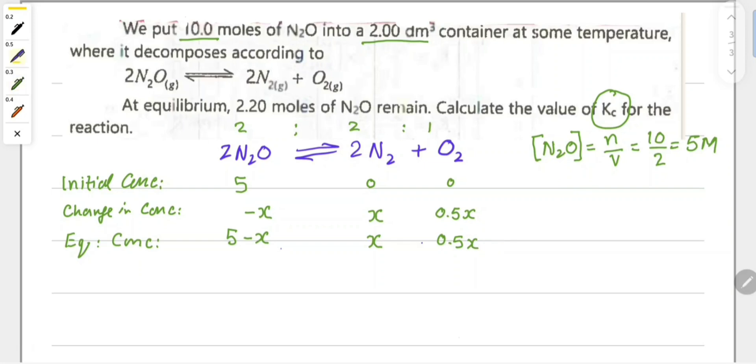At equilibrium, 2.20 moles of N2O remains. This 5 minus x equals moles per volume, which is 2.2 moles divided by 2 cubic decimeters, giving 1.1 molar. So 5 minus x equals 1.1 molar.